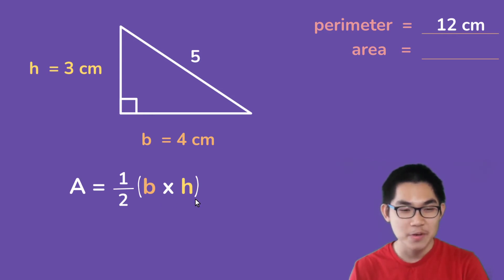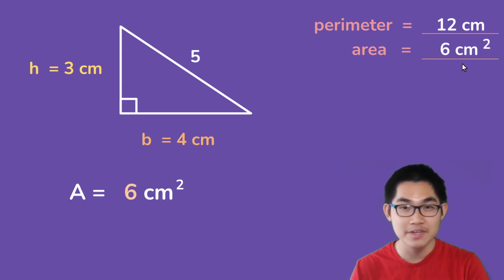And so again, we know that the base is 4, the height is 3. So 4 times 3 gives you 12. And 12 times 1 over 2 is the same thing as 12 divided by 2, which is equal to 6 centimeters squared. And so the area is 6 centimeters squared, and the perimeter is 12 centimeters. And that is our answer.